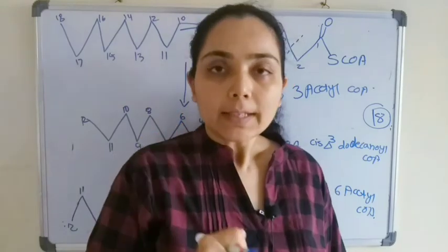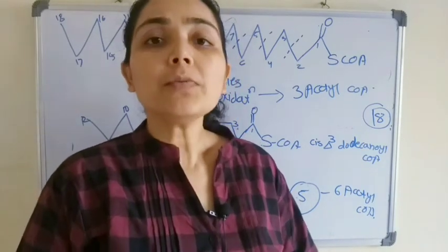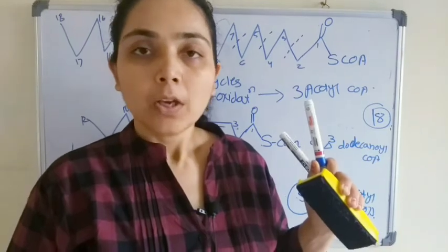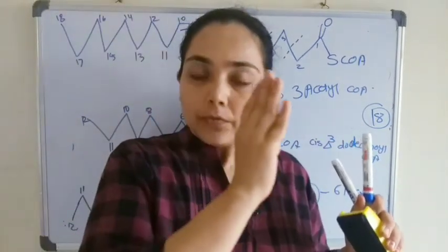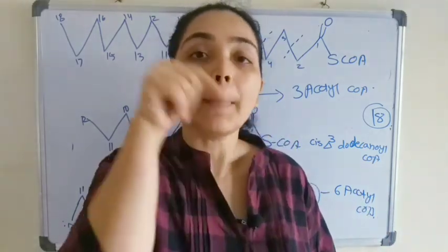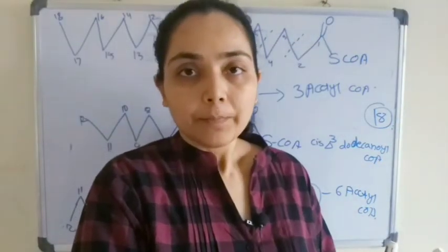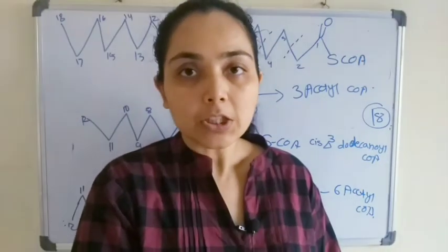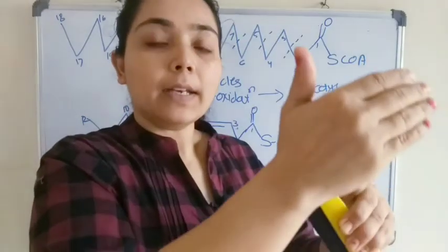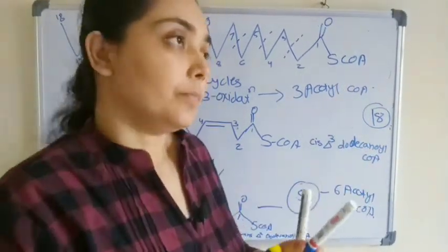For the beta oxidation of monounsaturated fatty acid, let us take the example of oleic acid, an 18-carbon compound. Beta oxidation takes place in the mitochondria of the cell, so the fatty acid must travel from the cytoplasm into the mitochondria via the carnitine shuttle system. Oleic acid is first activated and transferred into mitochondria, giving oleoyl CoA.